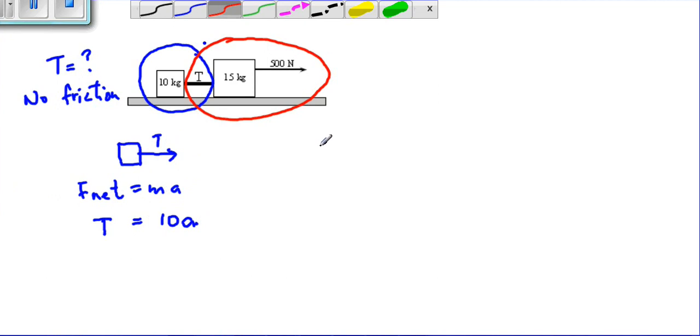Now if we draw a diagram for the 15 kilogram block, we have our 15 kilogram block. What is pulling the 15 kilogram block directly? We see that it is the 500 newton force pulling it forward and T is pulling it backwards. If we write down F net equals ma for this, we will see that it will be 500 minus T equals 15A. This is very important: we break down our diagram into two pieces, or if there's three blocks, even three pieces.